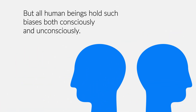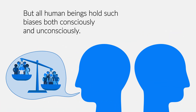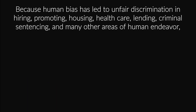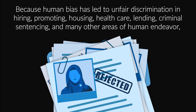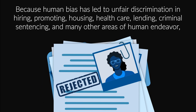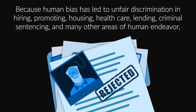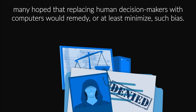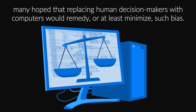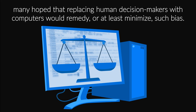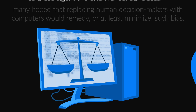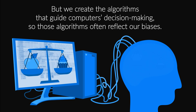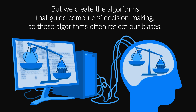But all human beings hold such biases both consciously and unconsciously. Because human bias has led to unfair discrimination in hiring, promoting, housing, healthcare, lending, criminal sentencing, and many other areas of human endeavor, many hoped that replacing human decision makers with computers would remedy or at least minimize such bias. But we create the algorithms that guide computers' decision making, so those algorithms often reflect our biases.